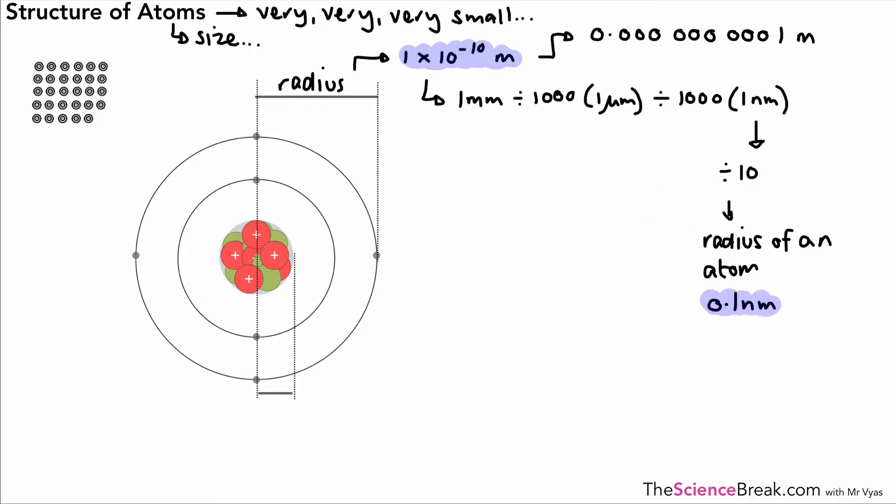The nucleus is even tinier. The scale on this diagram—and pretty much every diagram you've ever seen—is completely wrong because the radius is about one ten-thousandth the radius of the atom. So we're talking about a nucleus radius of about 1 × 10^-14 meters, one ten-thousandth of the radius. You can see this diagram's scale is totally wrong.